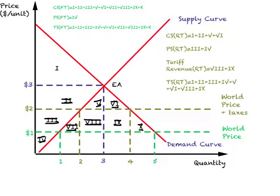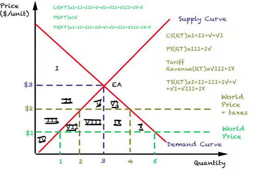Under restricted trade, the government has become an active participant. So we now have consumer surplus, producer surplus, and tariff revenue. When you add all of these up, the total surplus under restricted trade is the sum of all areas except for two: the area of triangle 7 and the area of triangle 10. So areas 7 and 10 are missing from total surplus under restricted trade.